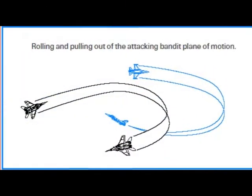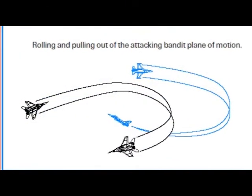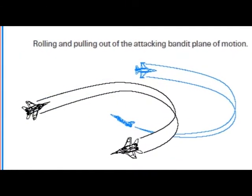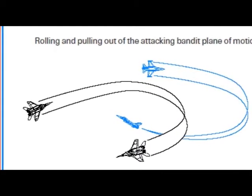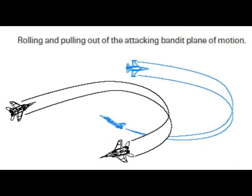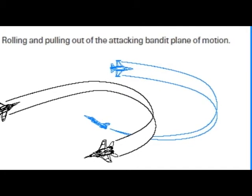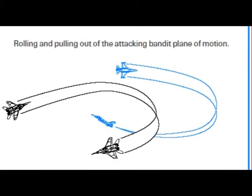Now this other maneuver is called rolling and pulling out. This graphic shows the rolling and pulling out of the attacking bandit. Roll the jet at least 90 degrees and then pull max G to get out of the bandit's plane of motion.